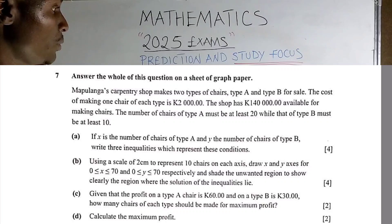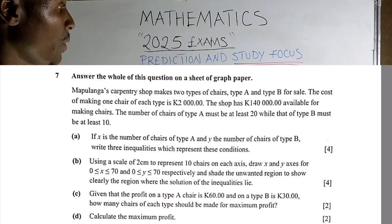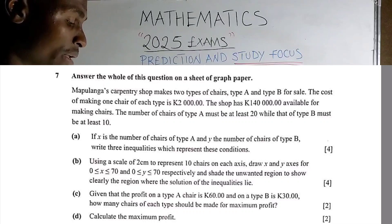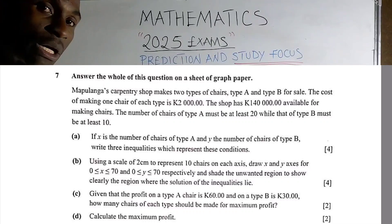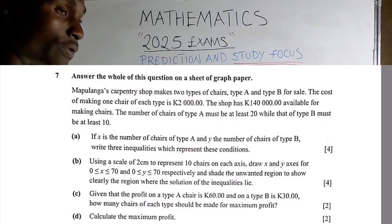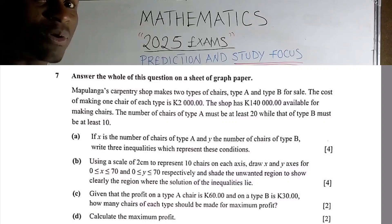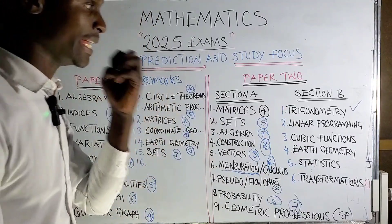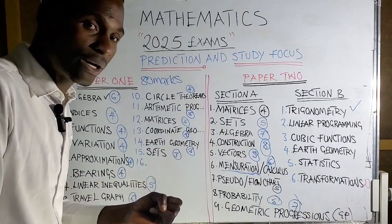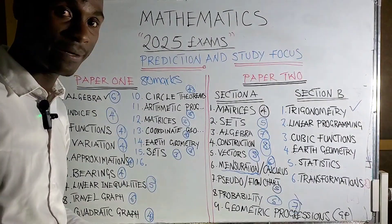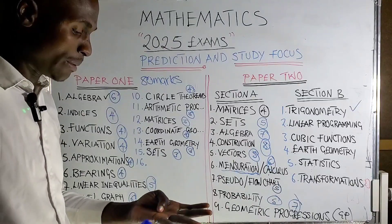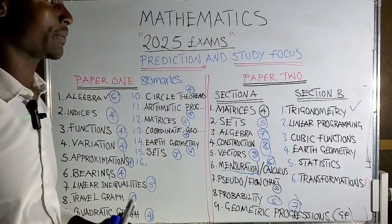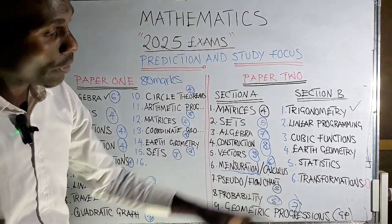For linear programming, the first question sometimes asks you to form linear inequalities from a given passage — these are straightforward questions. If you're asked to come up with four linear inequalities, you then graph those four inequalities. One inequality is one mark; graphing it is another mark. So four correct inequalities correctly graphed gives you eight marks already in a 12-mark question.